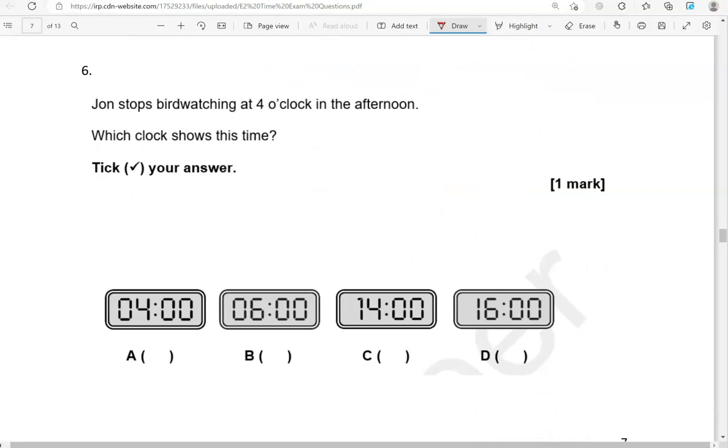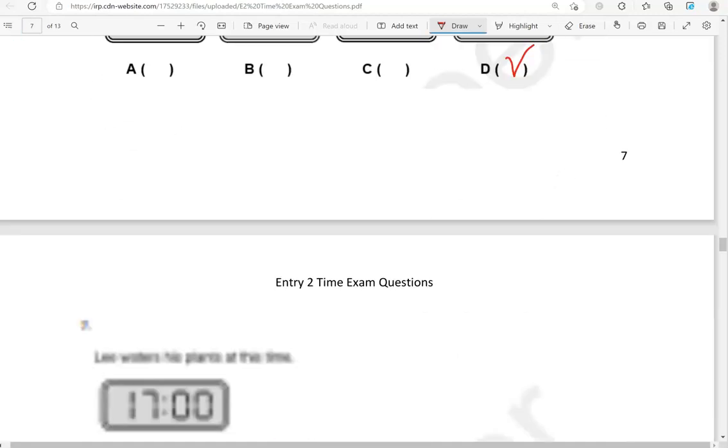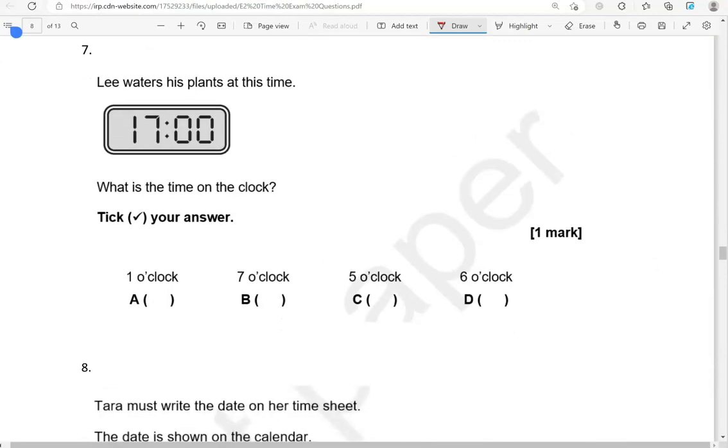Stops bird watching at 4 o'clock in the afternoon. Which clock shows this time? Tick your answer. The options we have don't give AM or PM. So, they're written in 24-hour format. This is in the afternoon. So, we're going to add 12 to the 4 to make it 16. So, now this is in the 24-hour format. Where do we have a match? That's option D.